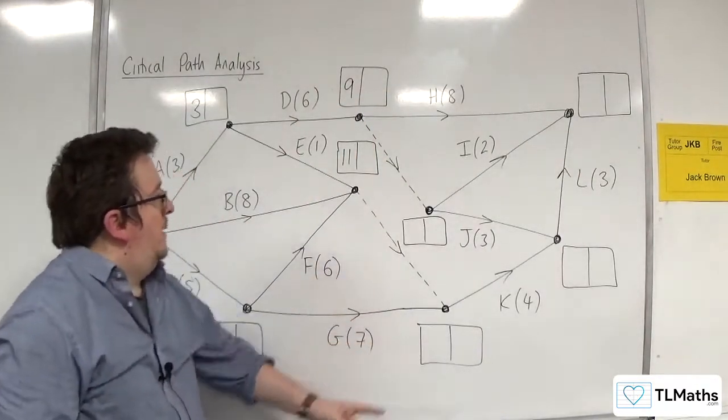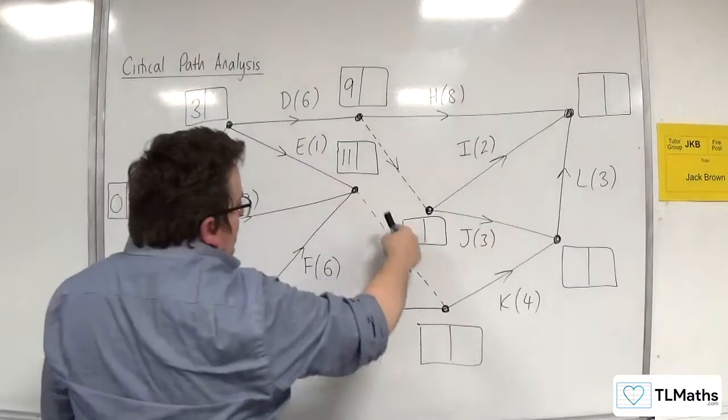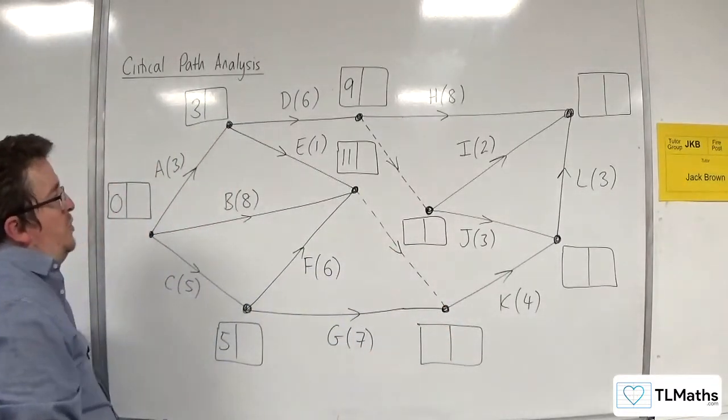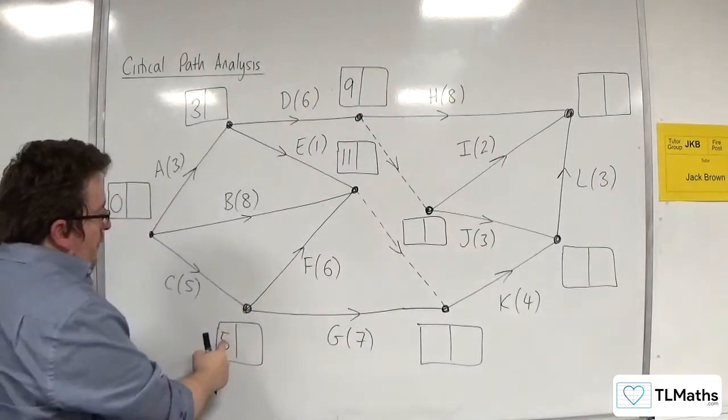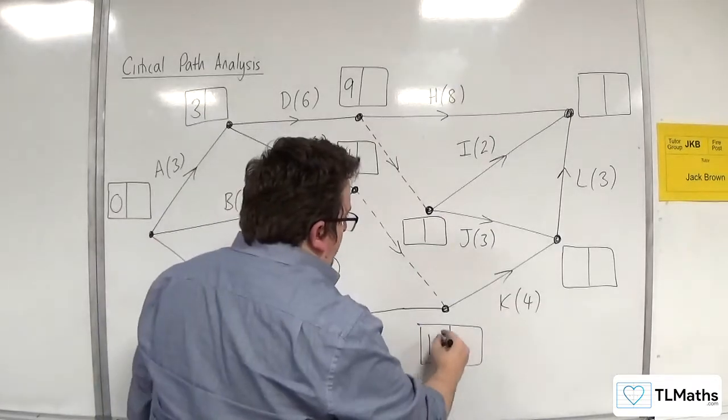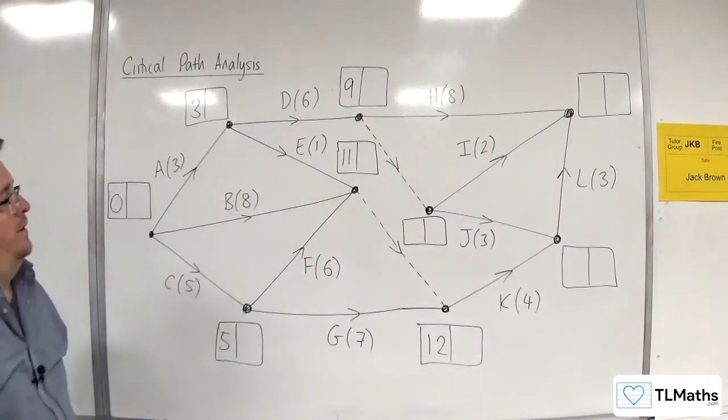Now, how about this one? We've got 11 plus 0, because that's a dummy activity there, so that's 0 duration. So we've got 11. Or we've got 5 plus 7 is 12. So it's got to be 12. We take the larger of the options.